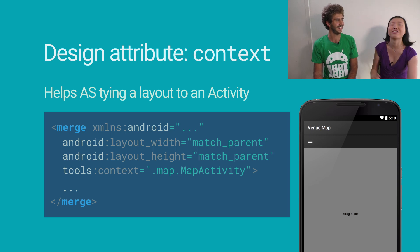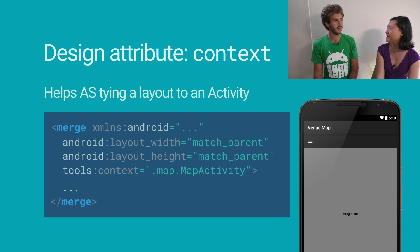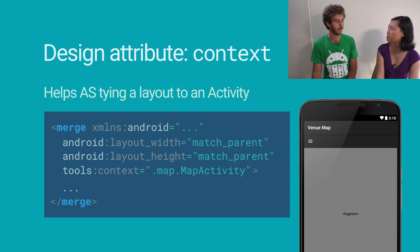The word 'context' makes a lot of sense because Android context is a completely different concept. It used to be called 'activity' in the early days, but they changed the name because it can also be used for fragments. For activities, Android Studio is able to pick up the theme by itself now, but for fragments it can't — so tools:context is particularly important in that case.